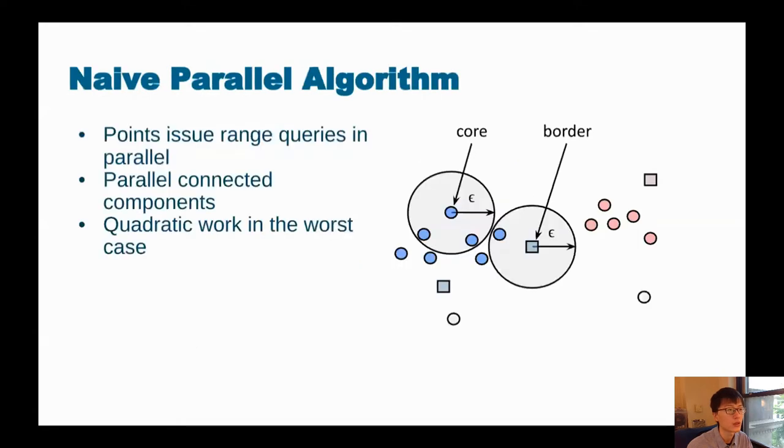Let's first imagine what would be a naive parallel algorithm look like. So we would imagine that points would have to issue parallel range queries and also after determining the core points as well as the neighborhood, they have to also perform some kind of parallel connected components algorithm. This can lead to quadratic work in the worst case because each range query issued can be linear in work.